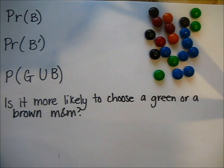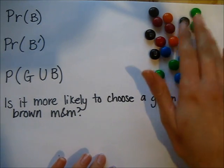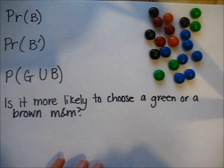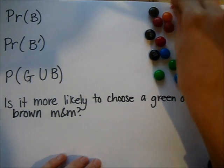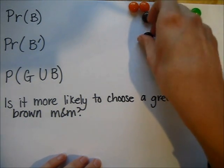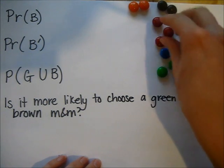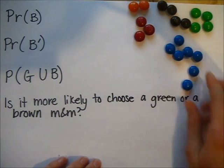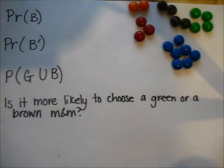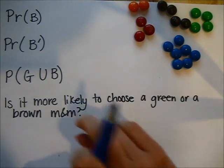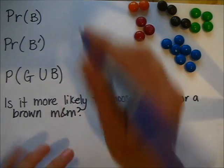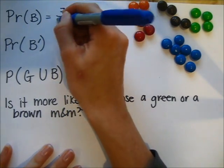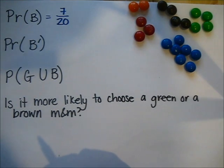Let's take a look at a second example to apply what we've learned. Here I have 20 different M&Ms. Closing my eyes, I want to find the probability of choosing different colors. Separating them out: 2 orange, 4 brown, 3 red, 4 green, and 7 blue — 20 altogether. The first question: what's the probability that I choose a blue M&M? There are 7 blue M&Ms out of 20 altogether, so the probability is 7 twentieths.